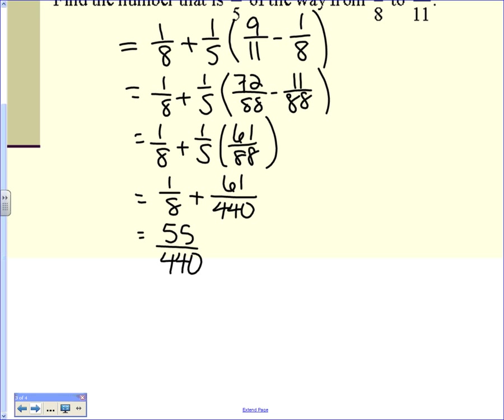440 divided by 8 is 55. So I have to multiply 8 times 55 to get to 440. So 1 times 55 is 55. And then what do you get?